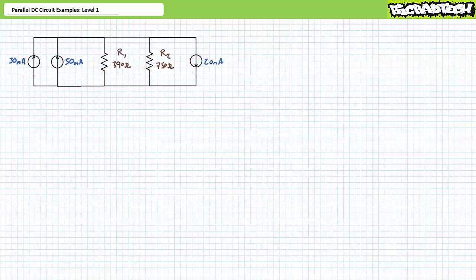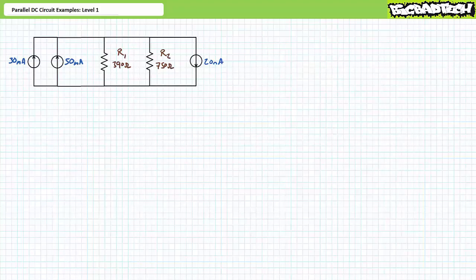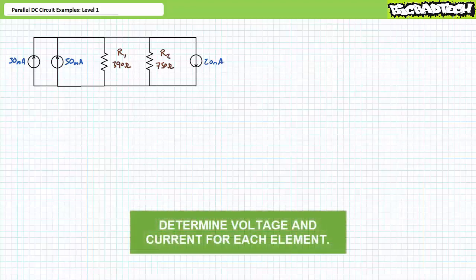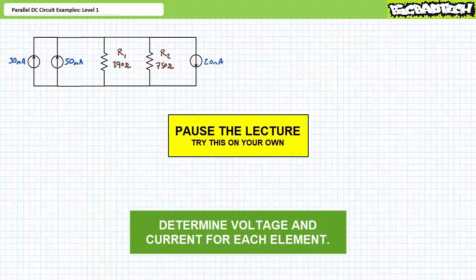Our last illustrated example features three current sources — 30 milliamps, 50 milliamps, and 20 milliamps — in parallel with R1 (390 ohms) and R2 (750 ohms). We're only asked to solve for the voltage drop and current through each element. Before you begin, make sure to note the direction of travel for these current sources. Pause the lecture and try this on your own. If you're tracking, you should have obtained the following results.